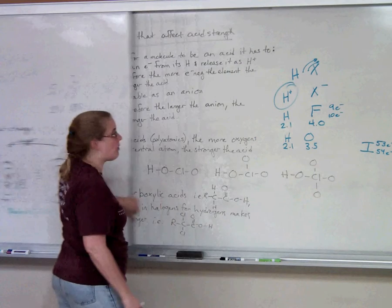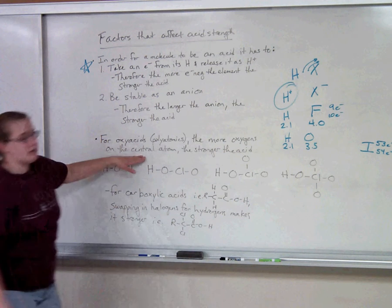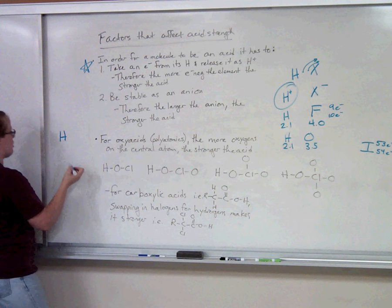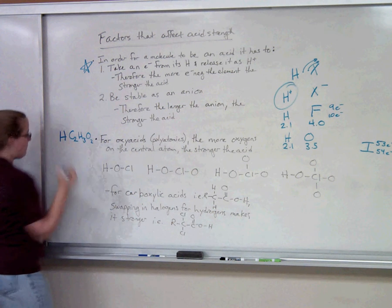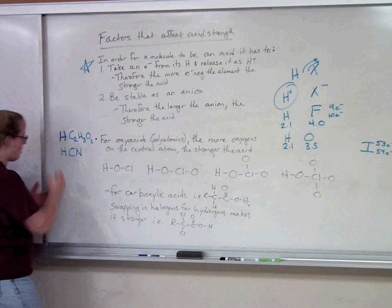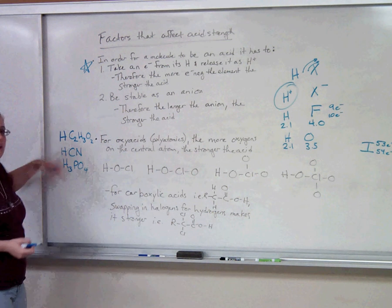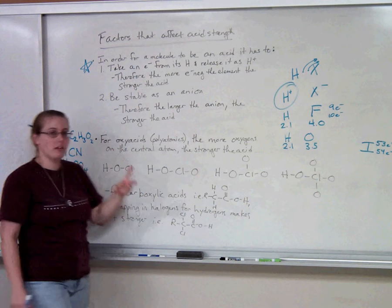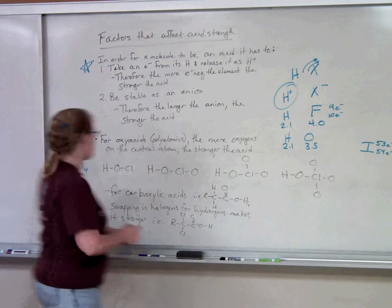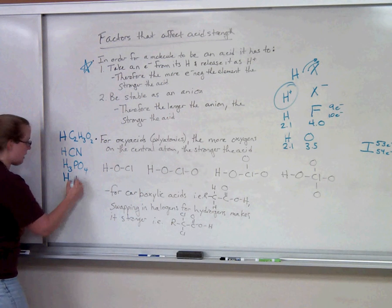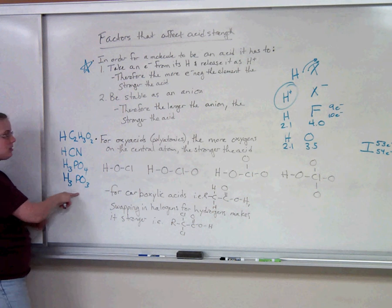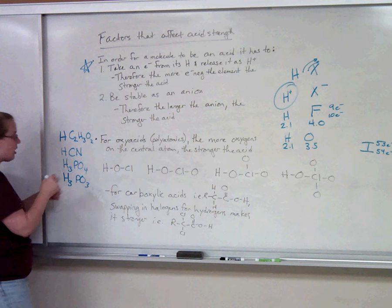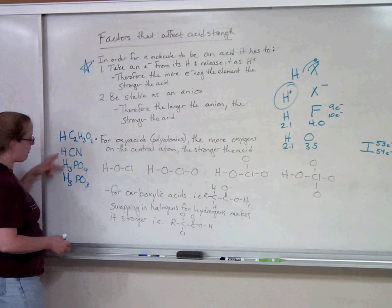Now let's talk about oxyacids, which means acids involving a polyatomic ion. You have hydrogen combined with anything from the polyatomic ion chart — acetate, cyanide, polyprotic acids, and so on. Most polyatomics have oxygens on them. If you have two polyatomic acids with the same central atom but different numbers of oxygens — for example, phosphoric acid versus phosphorous acid — you can compare those. You cannot compare two polyatomic acids that have nothing in common chemically; on a test you'll only be asked to compare ones that differ only in the number of oxygens.